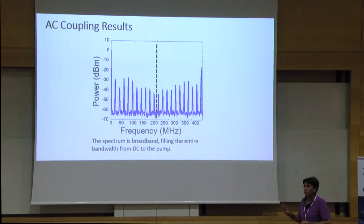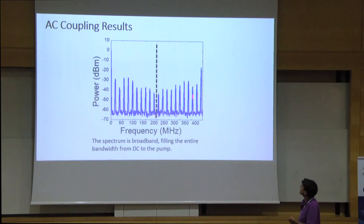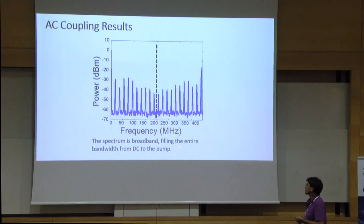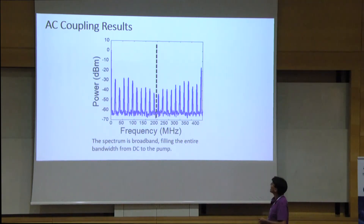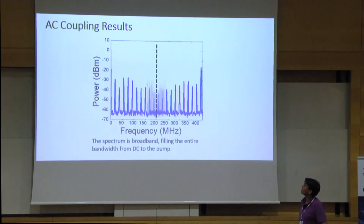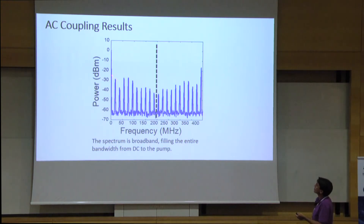This is the result. We're modulating at the repetition rate. This is the pump, this is DC — we are lighting the entire range between the pump and DC, something like 10 octaves. Normally all those modes would compete. In terms of mode locking, it does exactly what we wanted. The spectrum is symmetric because if this is a signal, this is its idler, and back and forth.